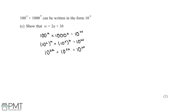We can multiply these two numbers together: 10 to the power of 2a multiplied by 10 to the power of 3b gives us 10 to the power of 2a plus 3b. Therefore 10 to the power of w equals 10 to the power of 2a plus 3b, which means that w equals 2a plus 3b. This question is worth two marks — the first mark for rewriting 100 to the power of a multiplied by 1000 to the power of b as 10 squared to the power of a multiplied by 10 cubed to the power of b, and the second mark for showing that w equals 2a plus 3b with correct reasoning.